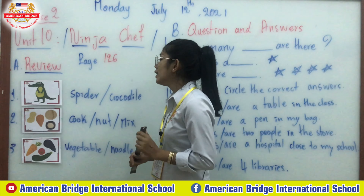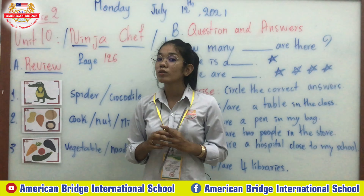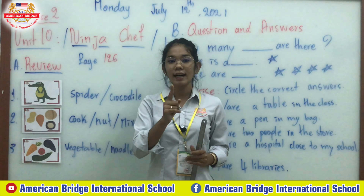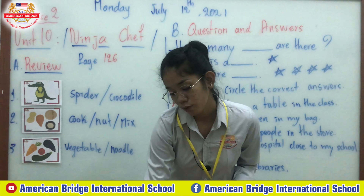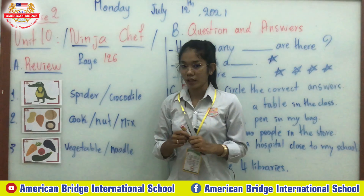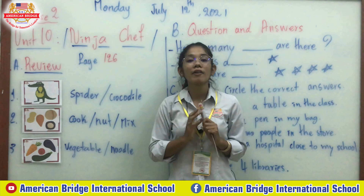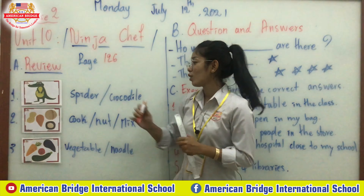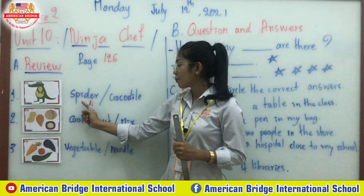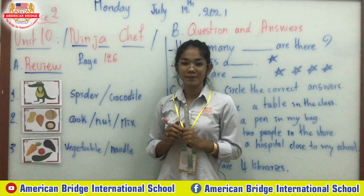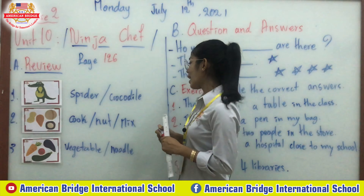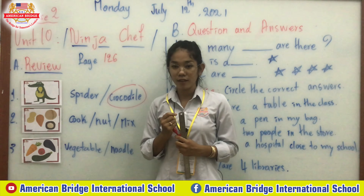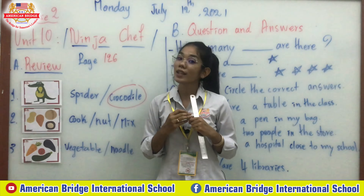Here we will review some words by looking at the flash cards, and then circle the correct word. Look at the first flash card — what do we call this one? Is it a spider or a crocodile? Yes, great — crocodile!